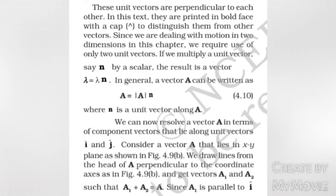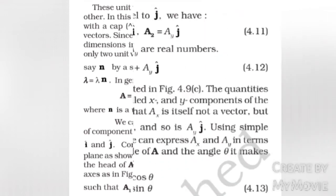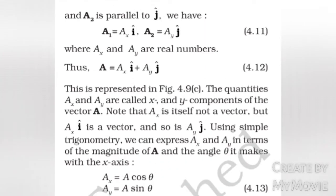Consider a vector A that lies in the xy-plane as shown in figure 4.9b. We draw lines from the head of vector A perpendicular to the coordinate axes as in figure 4.9b and get vectors A1 and A2 such that vector A1 plus vector A2 equals vector A. Since vector A1 is parallel to î and vector A2 is parallel to ĵ, we have vector A1 equals AX î and vector A2 equals AY ĵ, where AX and AY are real numbers. The quantities AX and AY are called the X and Y components of vector A. Note that AX itself is not a vector, but AX î is a vector, and so is AY ĵ.